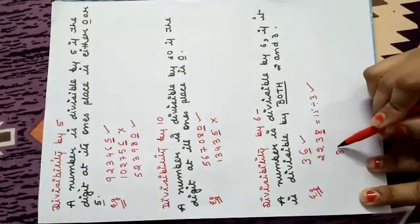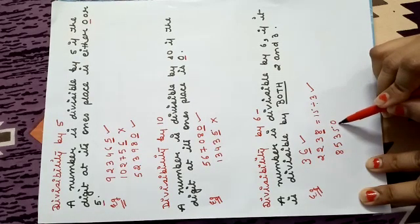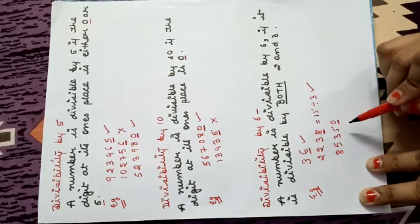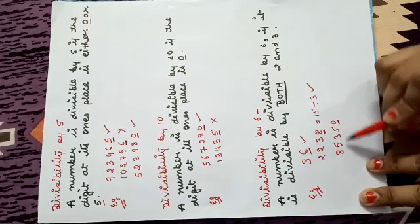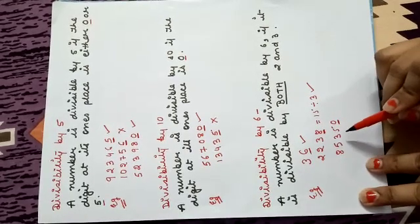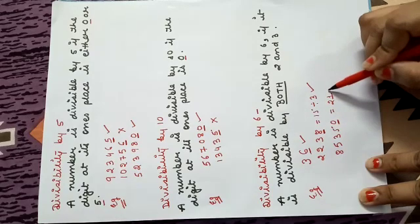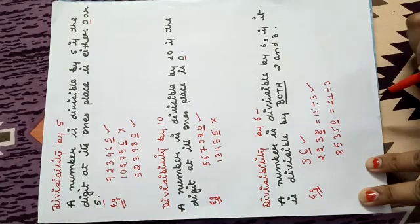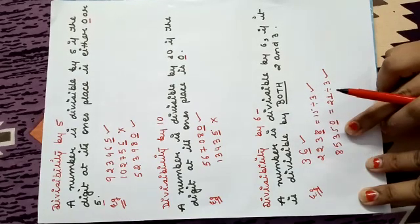Now see one more example: 85350. At 1's place it is 0, so it is divisible by 2. Now check if it is divisible by 3: 5 + 5 + 10 + 18 + 19 + 20 + 21 — the sum is 21, and 21 is divisible by 3. That means this number is divisible by 6.